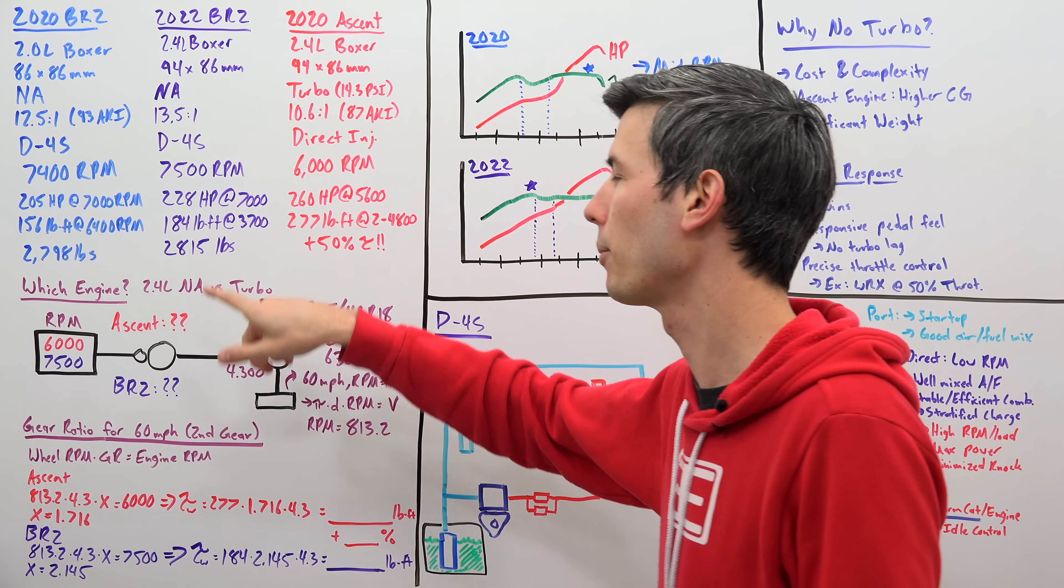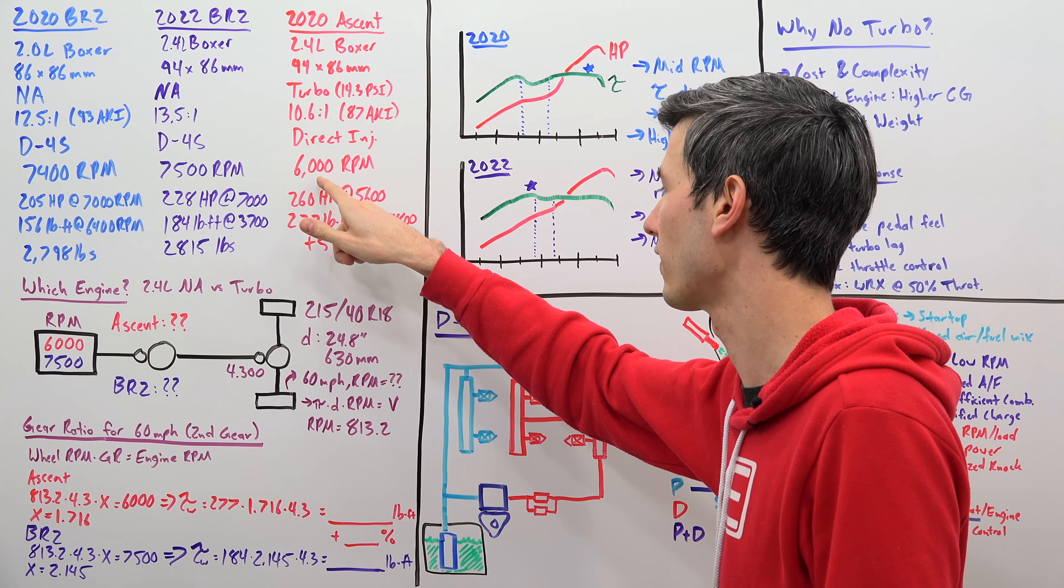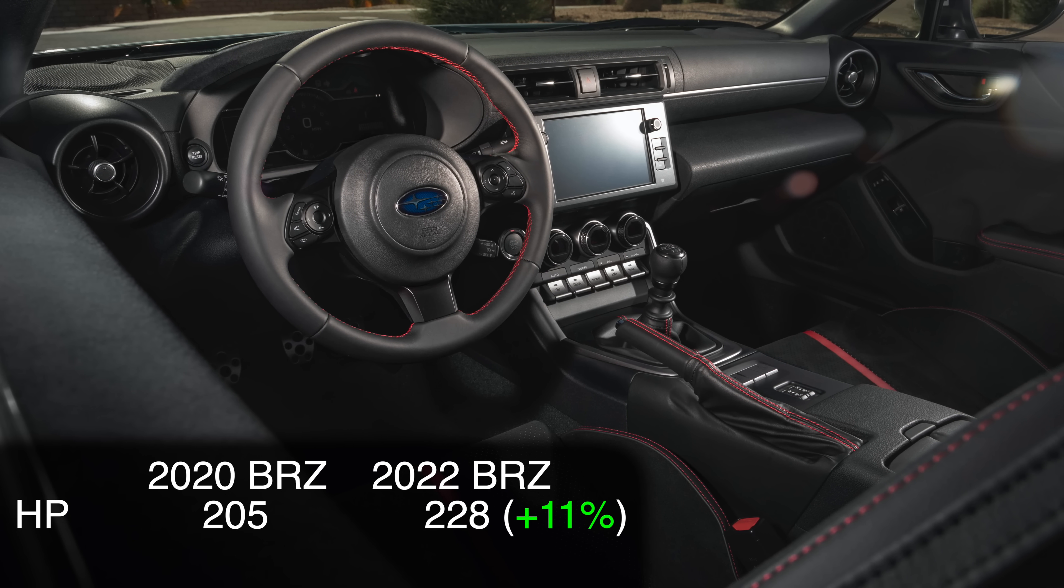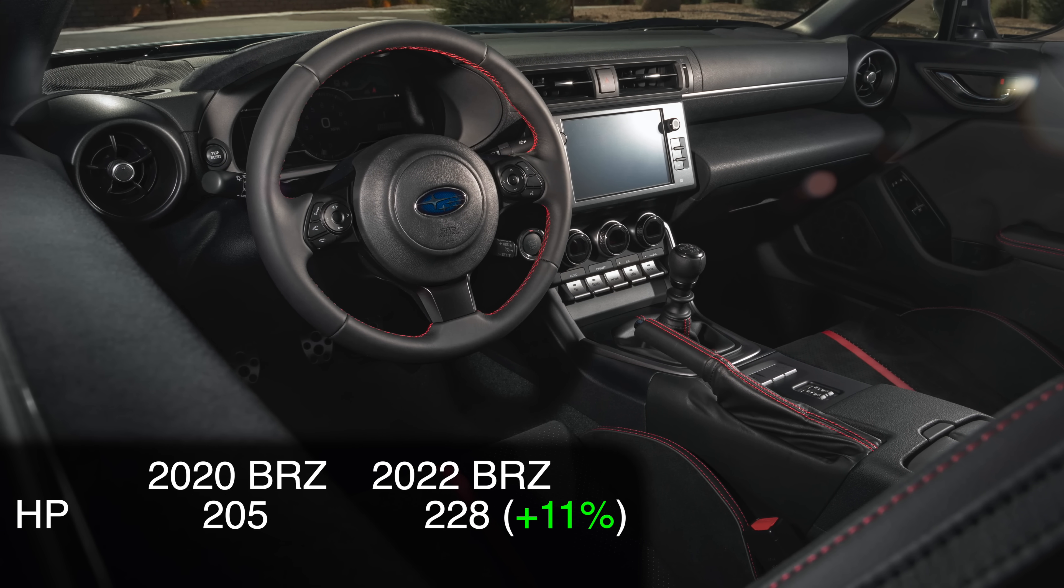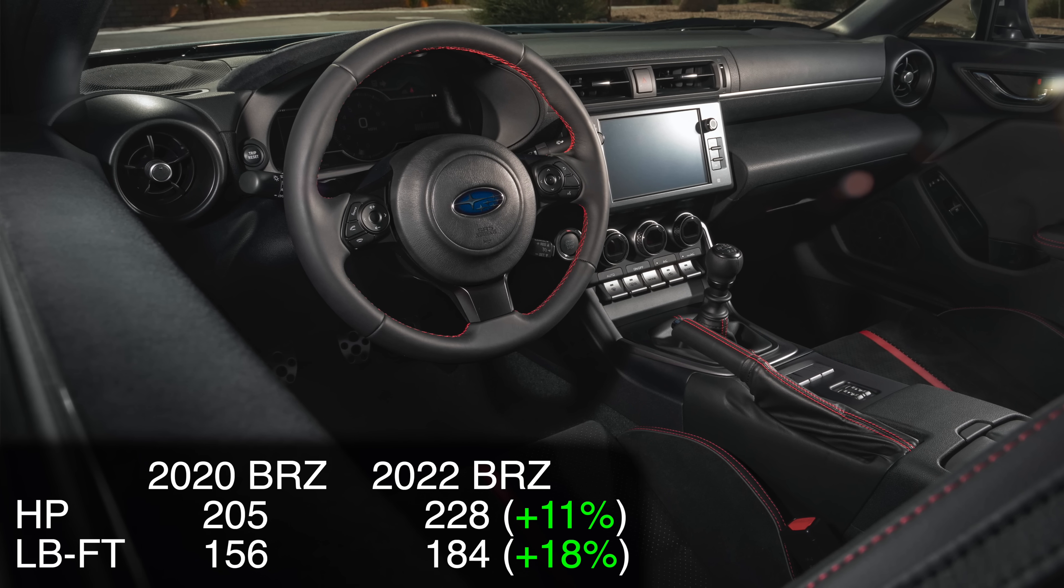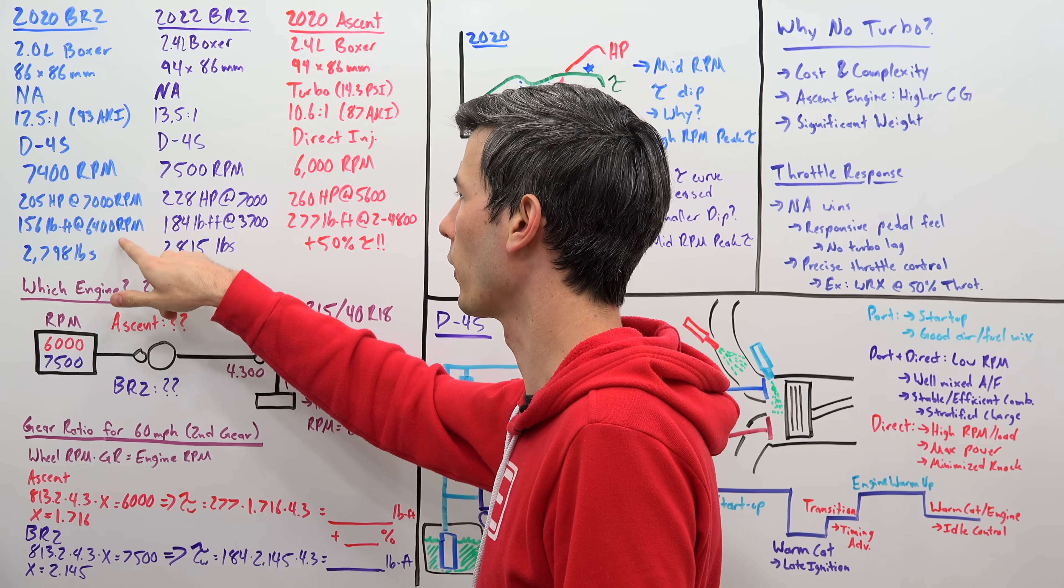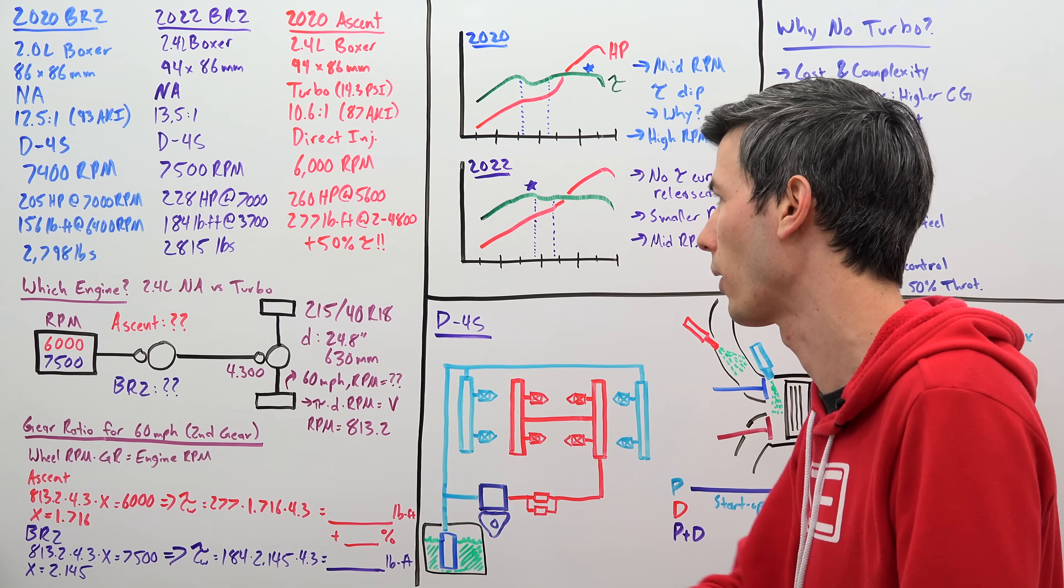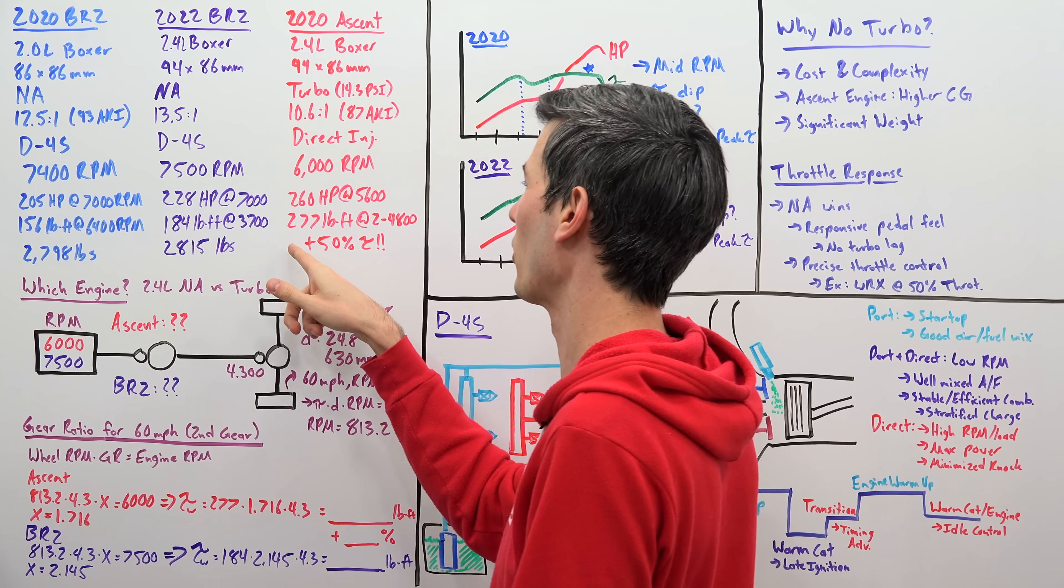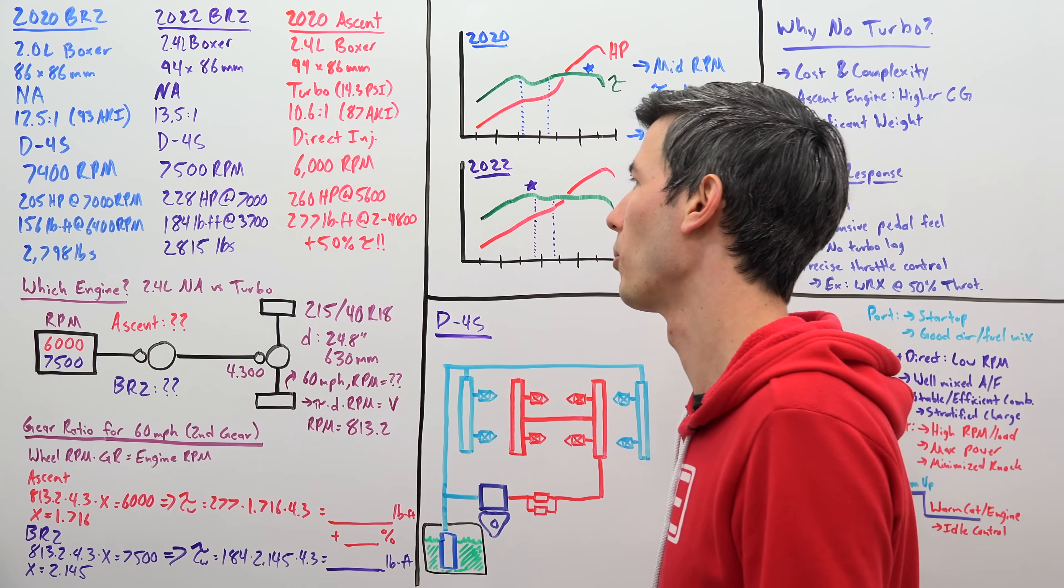Our engine getting a bit of an rpm increase. Redline is 7500 versus 7400 for the previous engine. Significantly greater than the Ascent engine's 6000 rpm. 205 horsepower previously, now we're up to 228 horsepower. The Ascent engine does have more, 260, but the BRZ is getting a nice torque bump as well. 184 pound feet versus 156 previously. And the really good news is that torque comes on a lot earlier at 3700 rpm versus peak torque in the previous engine was at 6400 rpm. So quite a bit earlier.